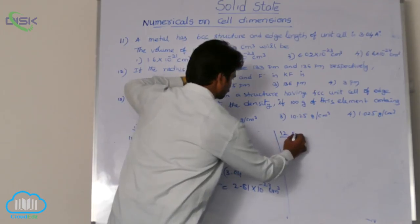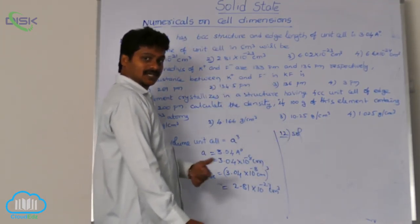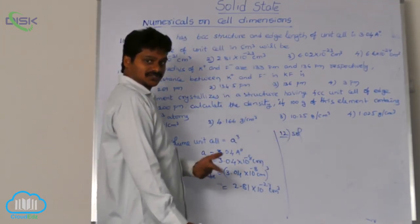Here, KF has rock salt structure. So, you know, KF has rock salt. Rock salt means NaCl type structure. It is having NaCl type structure.